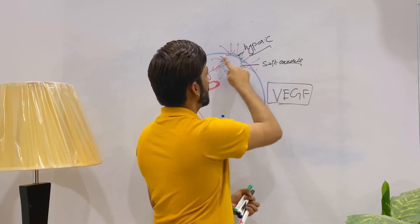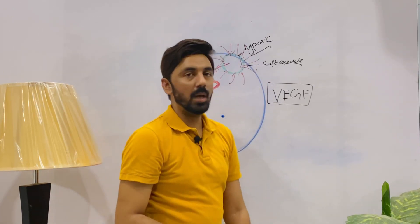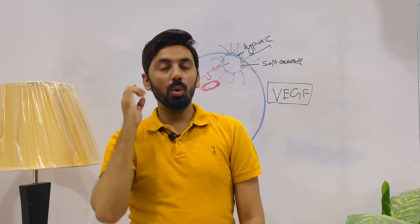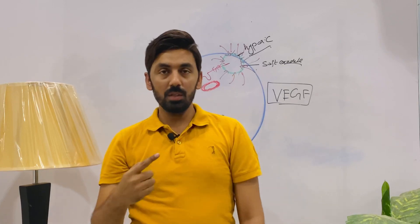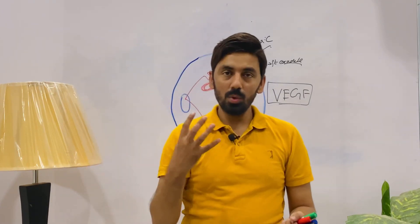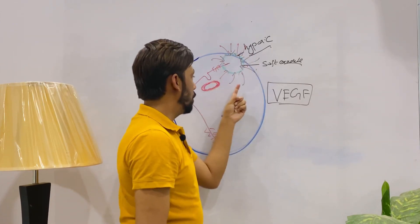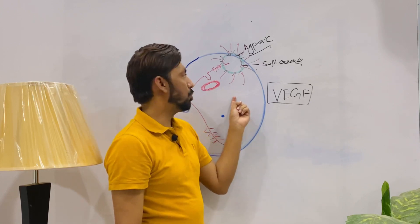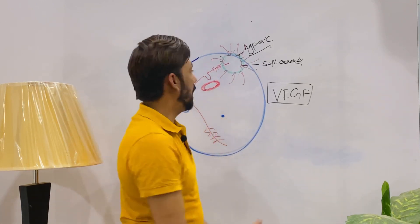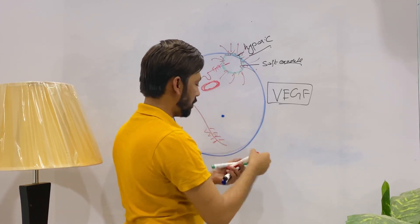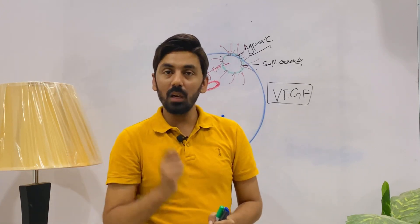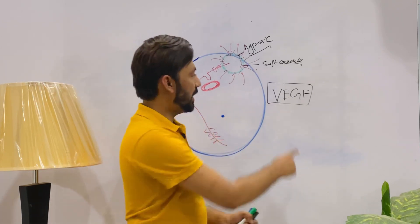All these new blood vessels are leaky and fenestrated. As you know, the retina is a transparent structure like the cornea and crystalline lens. Only the pigmentary layer of the retina is pigmented; the remaining nine layers are transparent. So leaky blood vessels inside the retina are very harmful. The hypoxic patch is surrounded by new leaky vessels, and blood comes out of these new blood vessels, surrounding the hypoxic patch with blood.